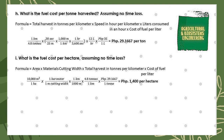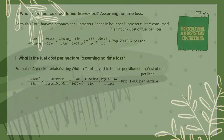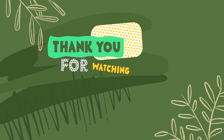Finally, we solve for the fuel cost per hectare assuming no time loss. The formula uses: area × cutting width × total harvest in tons per kilometer × cost of fuel per ton. Substituting: (10,000 m² / 1 ha) × (1 m / harvester) × (4.8 tons / 1 km) × (1 km / 1000 m) × (29.1667 pesos / ton), giving a final answer of 1400 pesos per hectare.